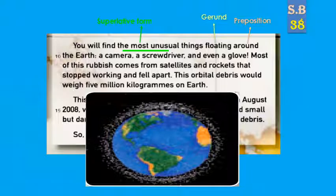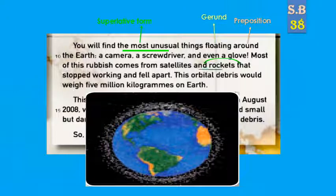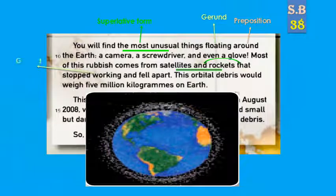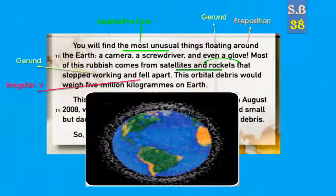Here we have 'around' — حول — it is a preposition. 'That' refers to satellites and rockets. 'Working' is a gerund — مصدر. 'Fell' — fell apart — is an irregular verb, فعل غير منتظم.